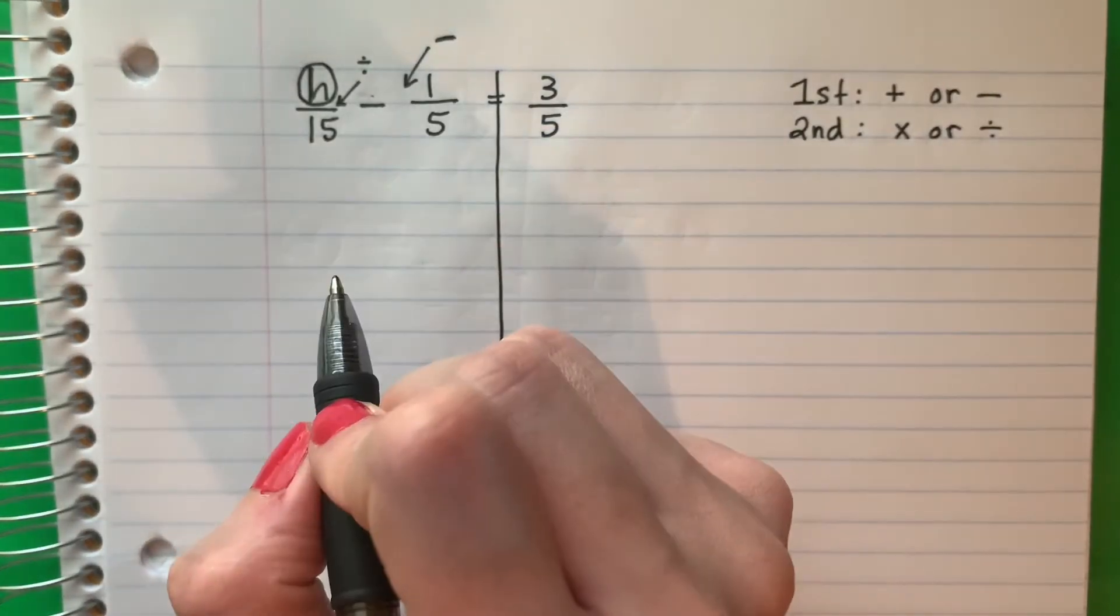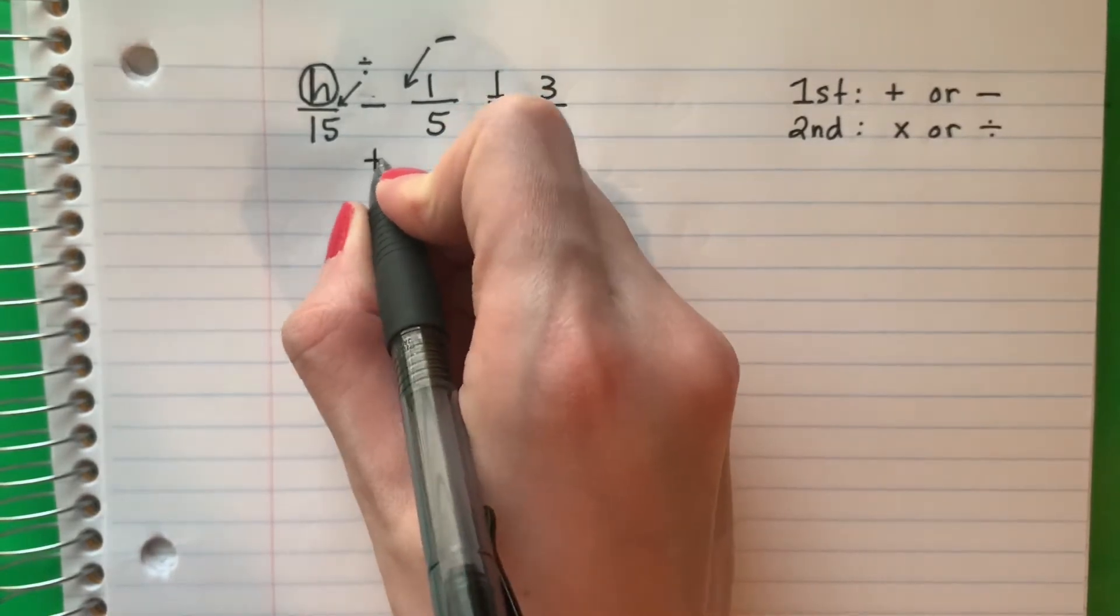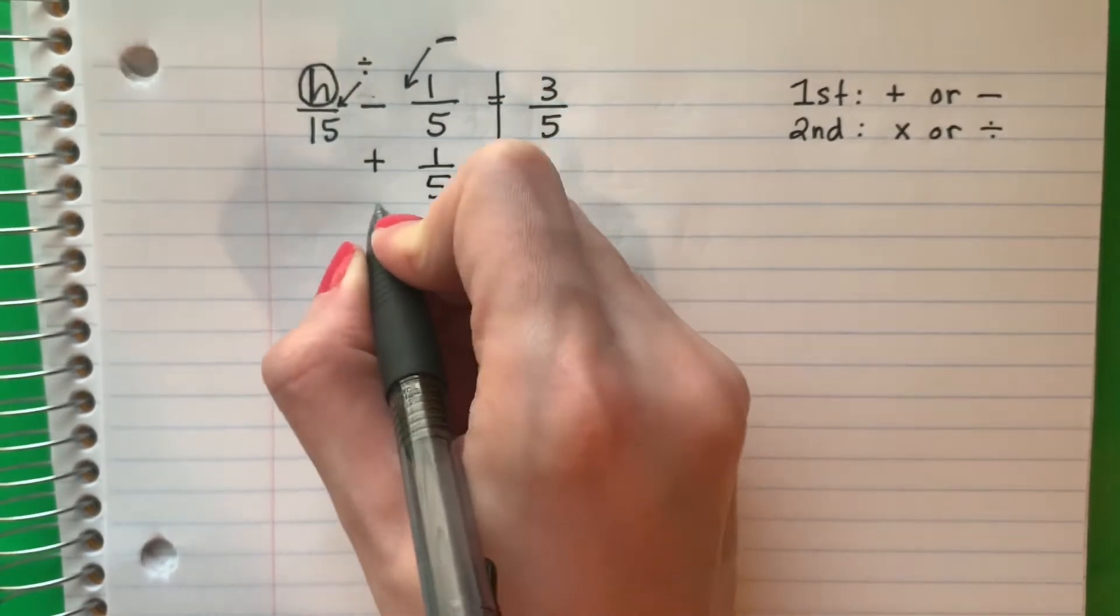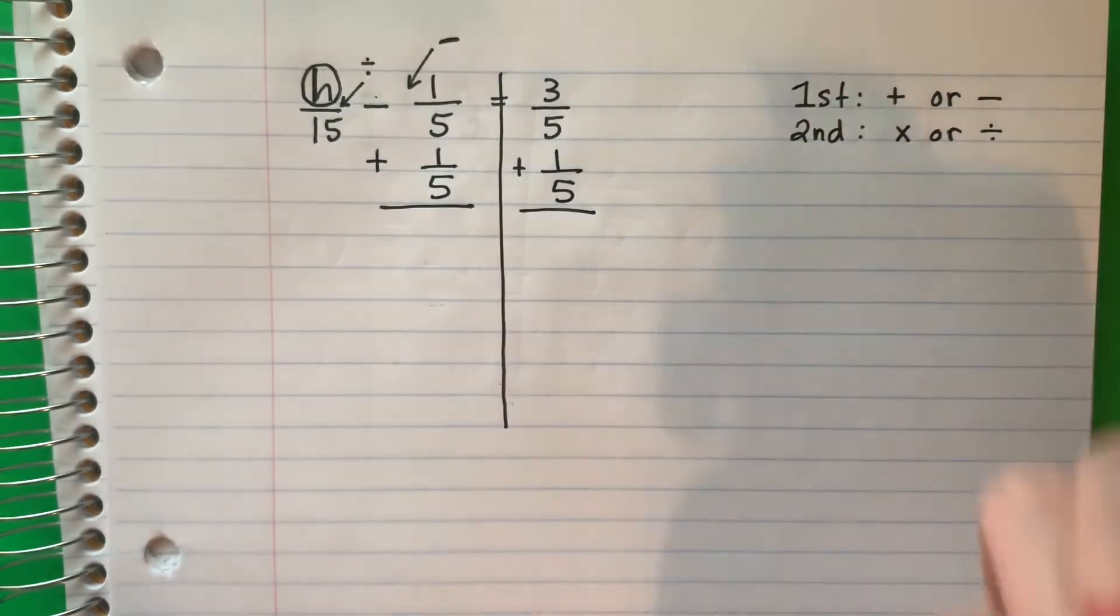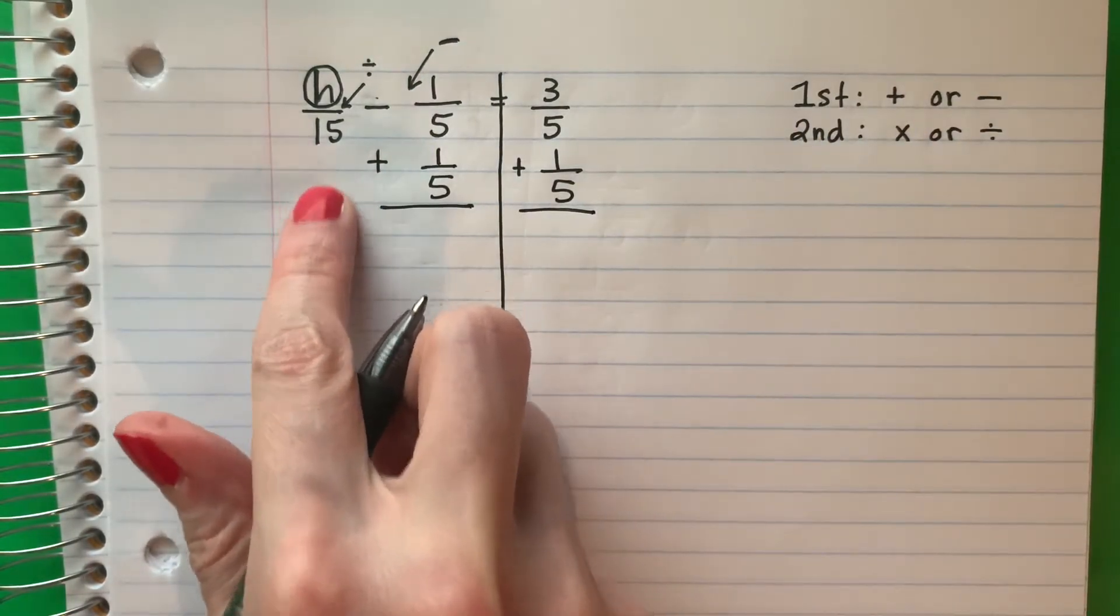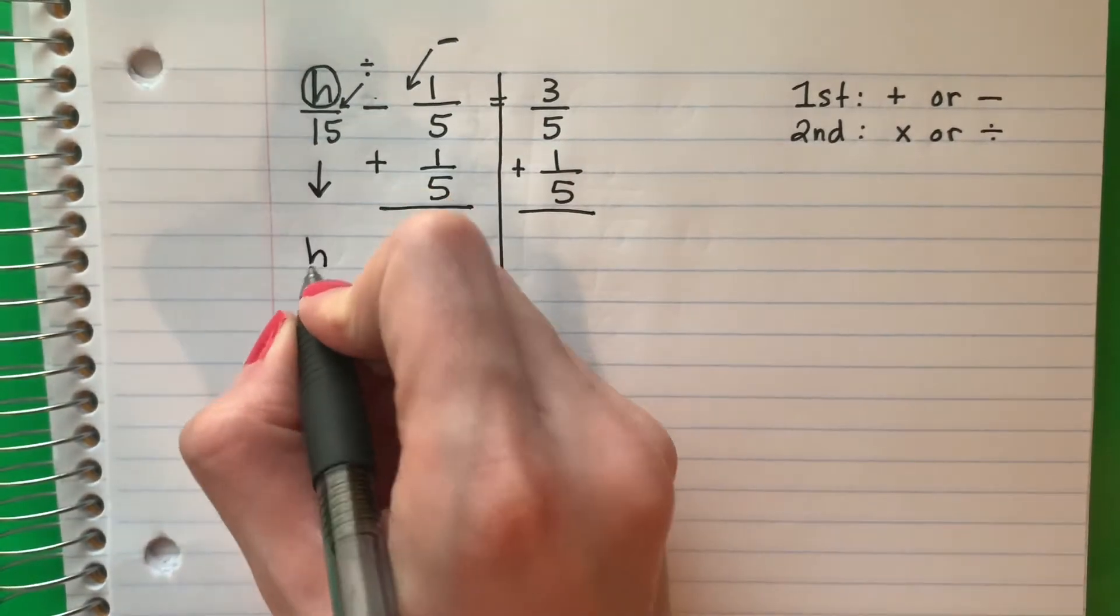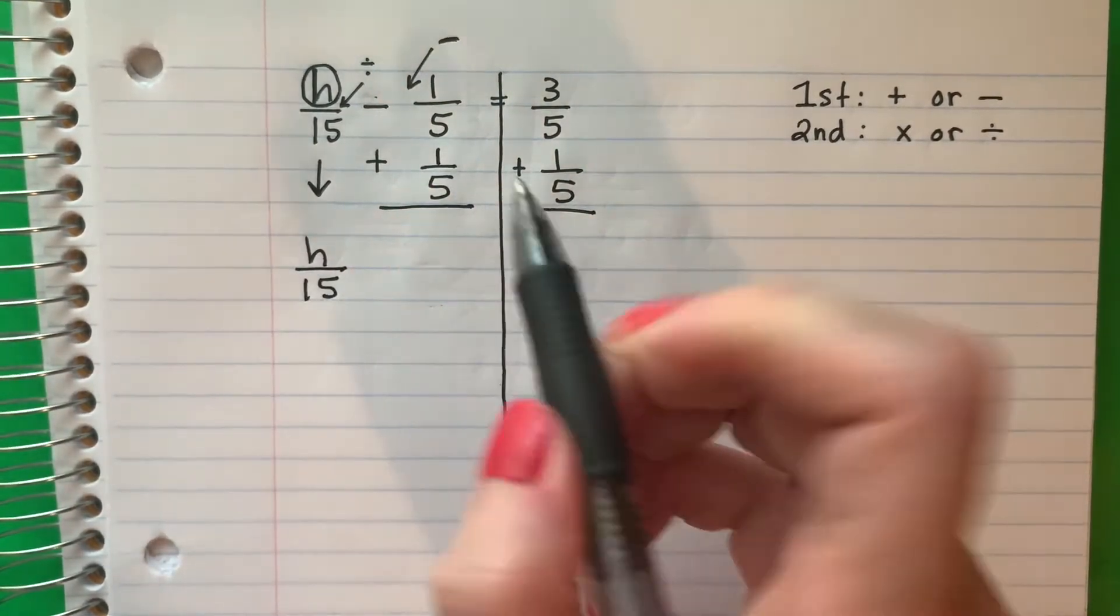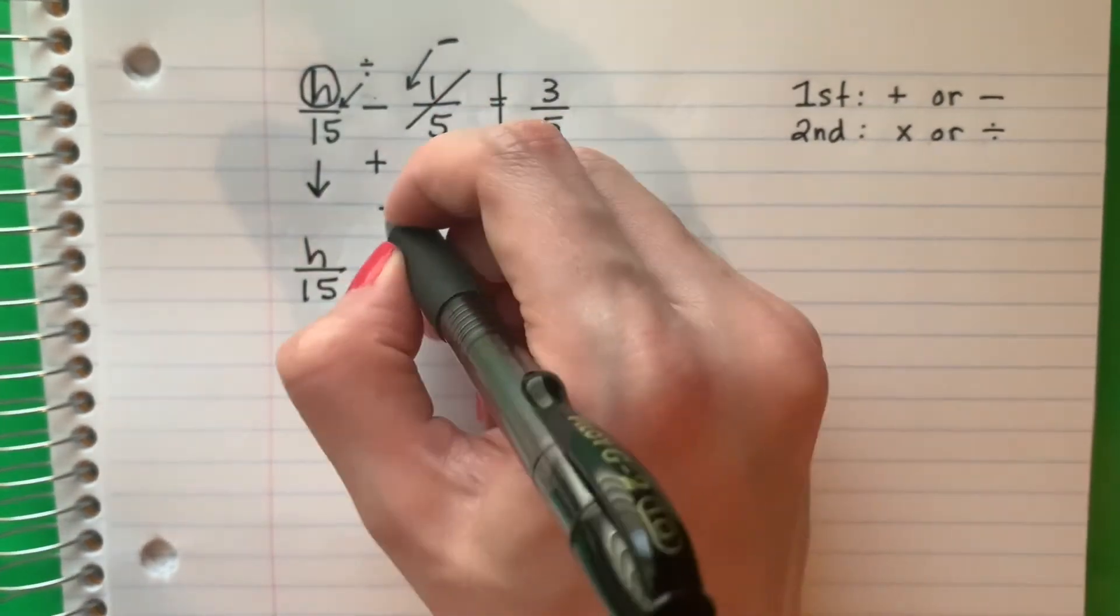The opposite of minus is plus. El opuesto de menos es más. So I'm going to put plus 1 fifth. And I'm going to copy plus 1 fifth. Here there's nothing. No hay nada. I'm going to copy. Voy a copiar. So this is H divided by 15. Negative 1 fifth plus 1 fifth is 0. 0. That cancels.